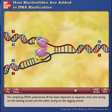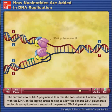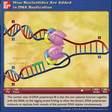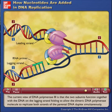For simplicity, DNA polymerase III has been depicted as separate units, one acting on the leading strand and the other acting on the lagging strand. The current view of DNA polymerase III is that the two subunits function together, with the DNA on the lagging strand folding to allow the dimeric DNA polymerase molecule to replicate both strands of the parental DNA duplex simultaneously.